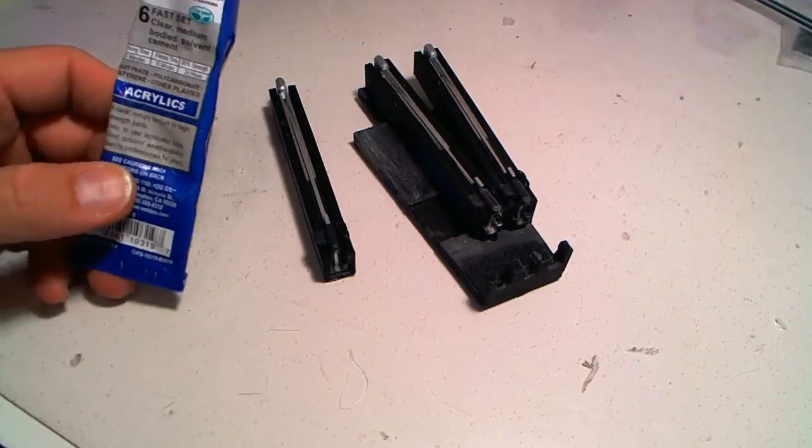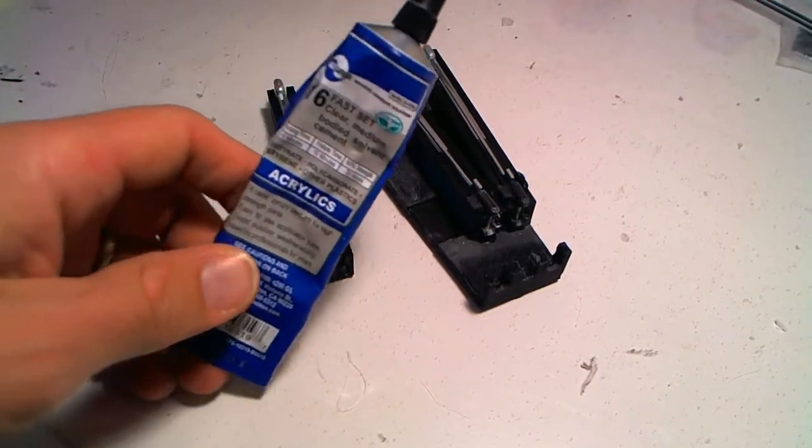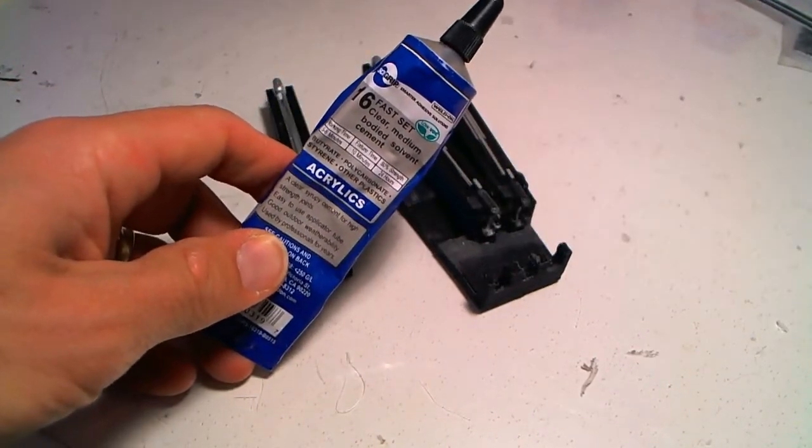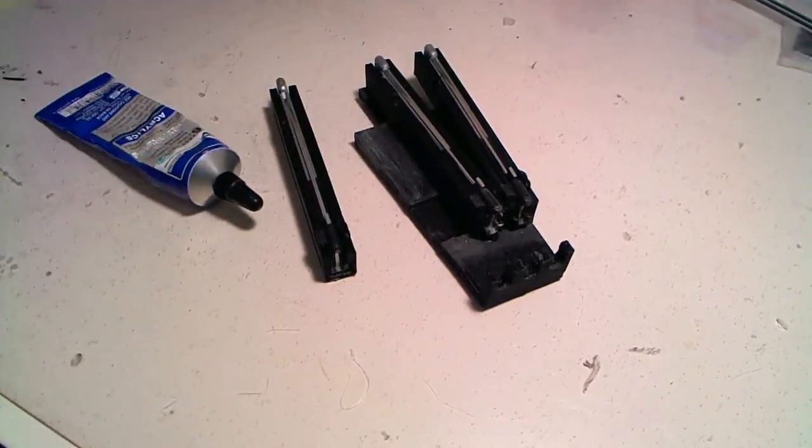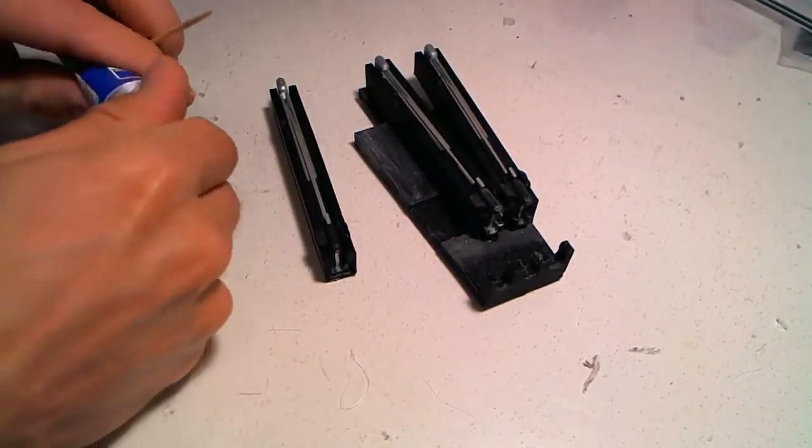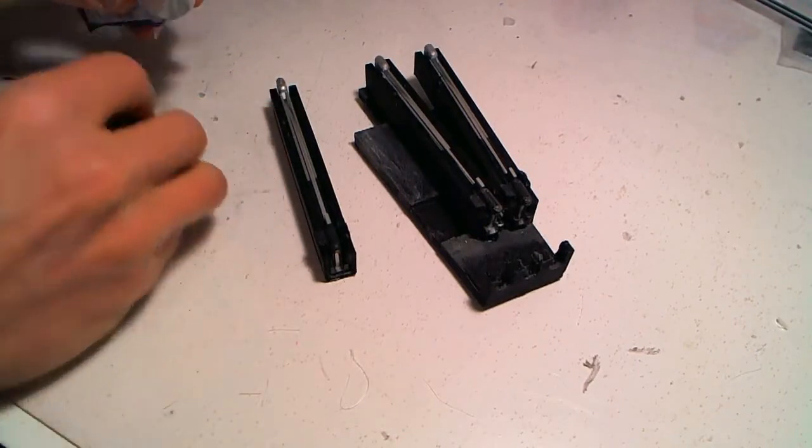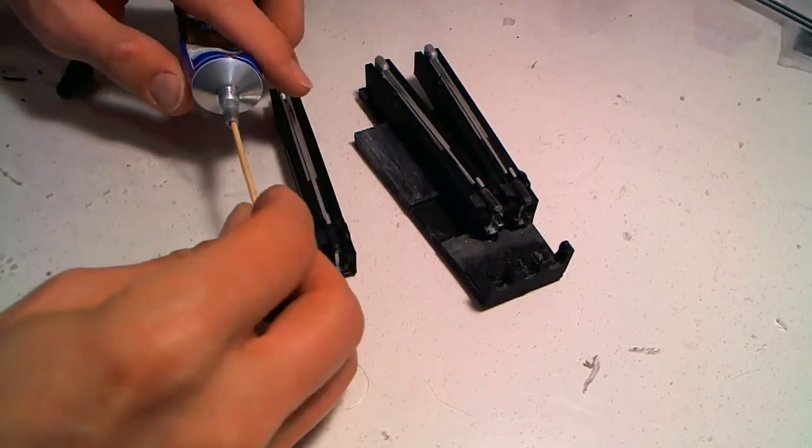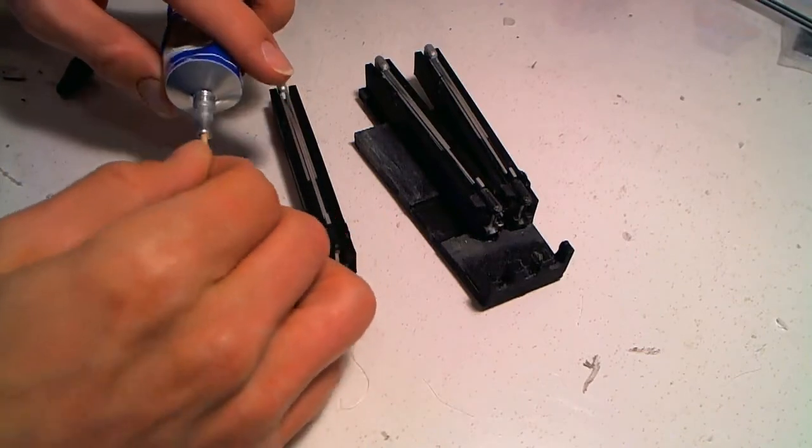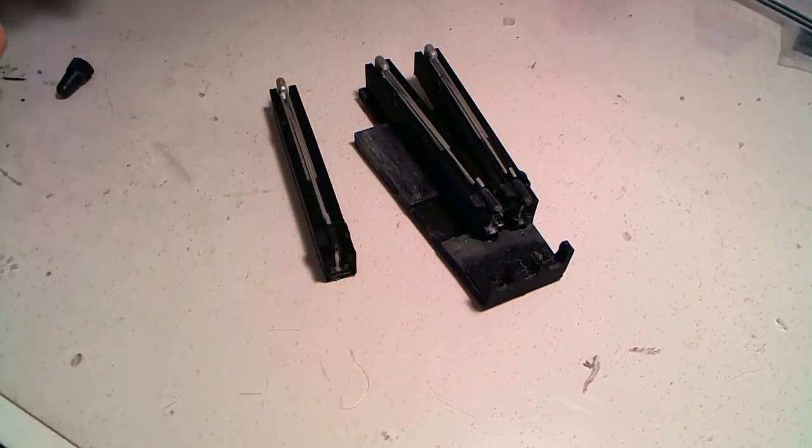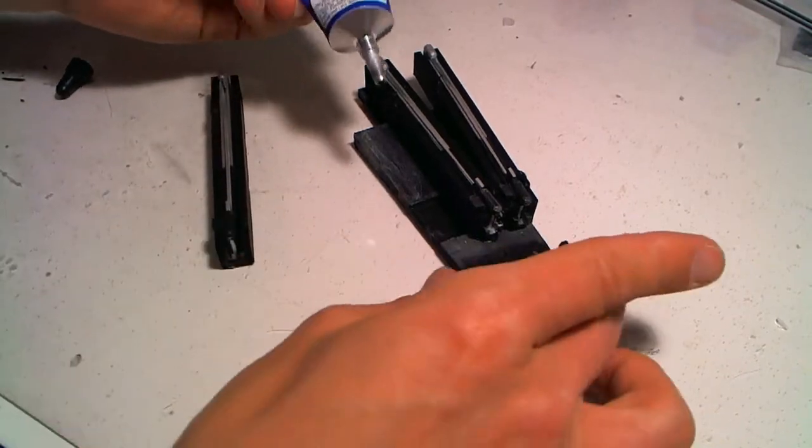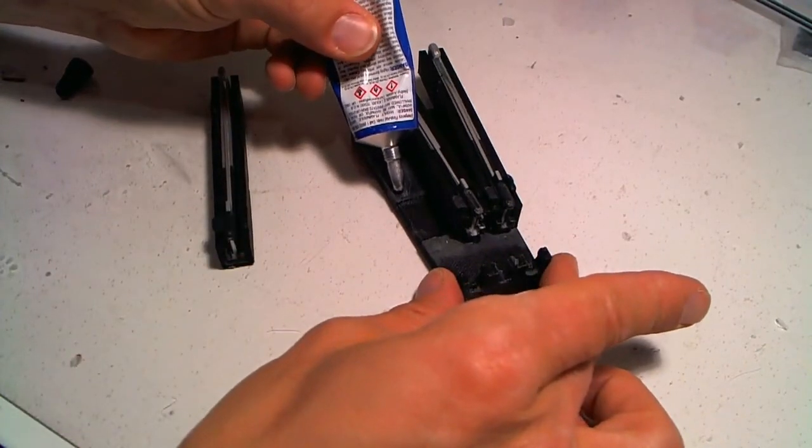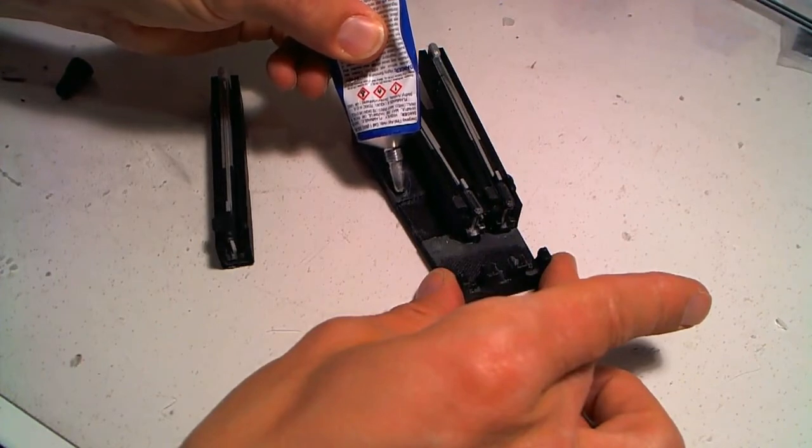And I'm going to be using this Cygrip No. 6 Fast Set Clear Medium Bodied Solvent Cement. Works great for all kinds of plastics here. Open up the tip here and use the wooden toothpick to just kind of open things up. It tends to gum a little bit after use right there. And then just put a bead of glue. You don't need a ton. A little dab will do you.